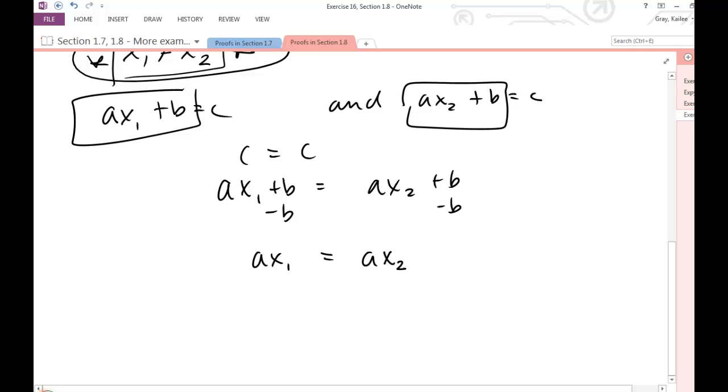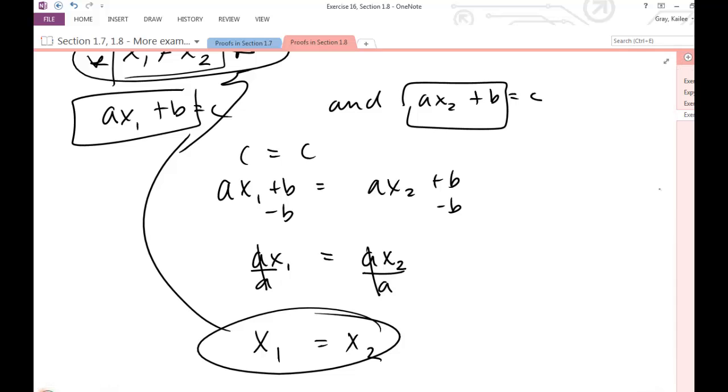I know that a is not zero, so it's okay for me to go ahead and divide both sides by a in an equation. As long as I'm doing something to both sides of my equation I'm good. a divided by a is 1, a divided by a is 1, and I get x1 is equal to x2, which contradicts our assumption up here that they were not equal to each other.